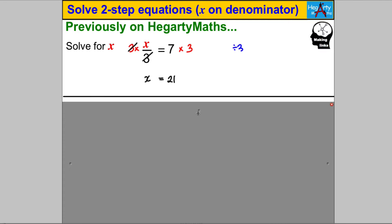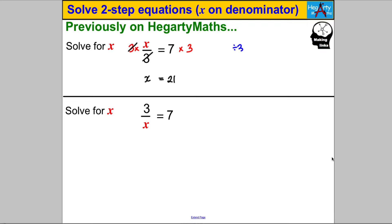What about this though — what's different? In this case we're doing 3 divided by X; we are dividing by X, it's on the denominator. How could you solve this? Let's think about the balance method — we don't want X on the denominator, so what could we do to both sides to remove it?